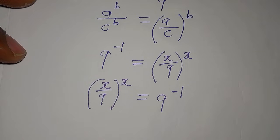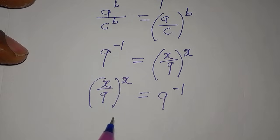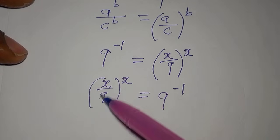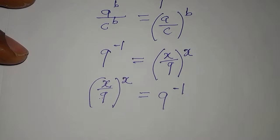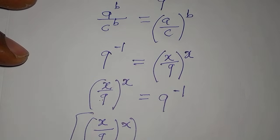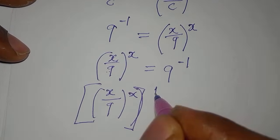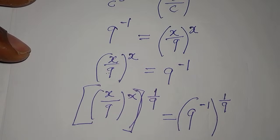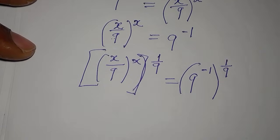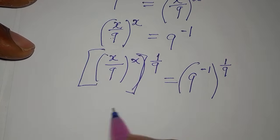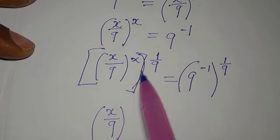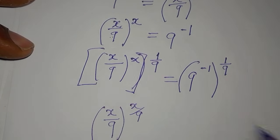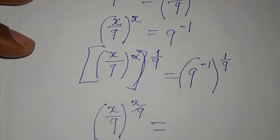To match the base and the power, we raise both sides to the power of 1 over 9. On the left side, the exponent x multiplied by 1 over 9 gives x over 9. So we have the quantity x over 9, raised to the power of x over 9, on the left. On the right side, we have 9 to the power of negative 1, raised to the power of 1 over 9.